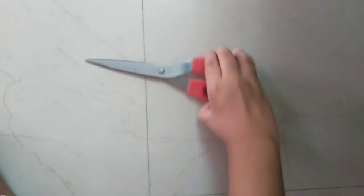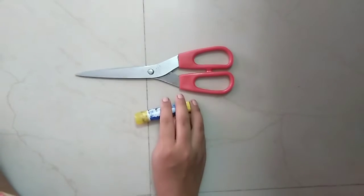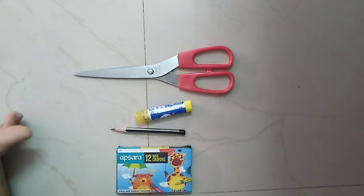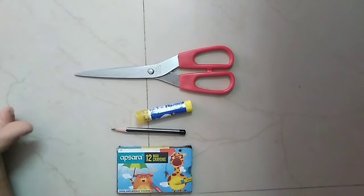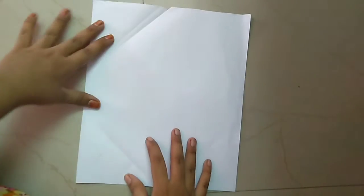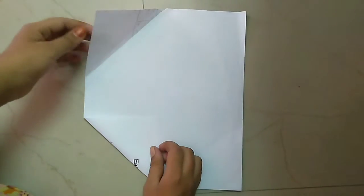Things needed are scissors, fairy gum or fairy glue, pencil, and crayons if you need. So take a 24 by 21 paper and fold it like this.